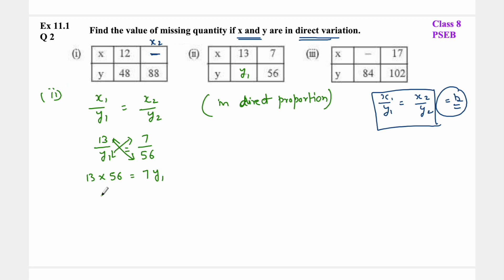To find y1, shift 7 to the other side: 13 into 56 upon 7 equals y1. Dividing: 7 into 56 is 8, so y1 equals 13 into 8, which is 104. This is the answer.